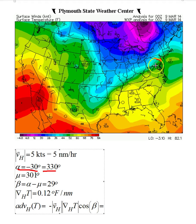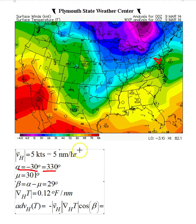We've already figured out that the gradient has an angle that's 301 degrees, and that's from the x-axis going all the way around — something like this. And therefore, the difference between the two is 29 degrees, and that's beta.